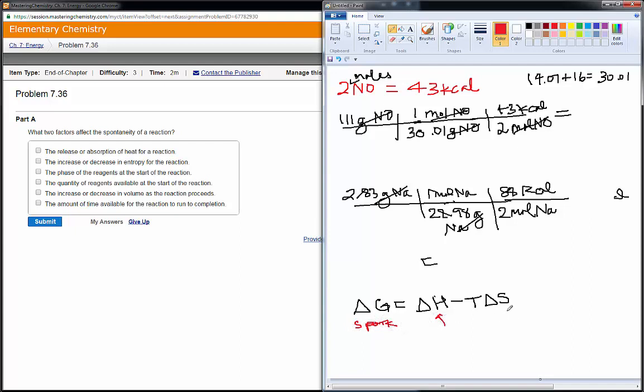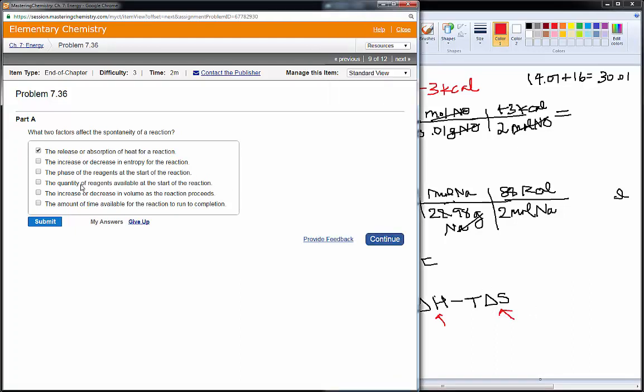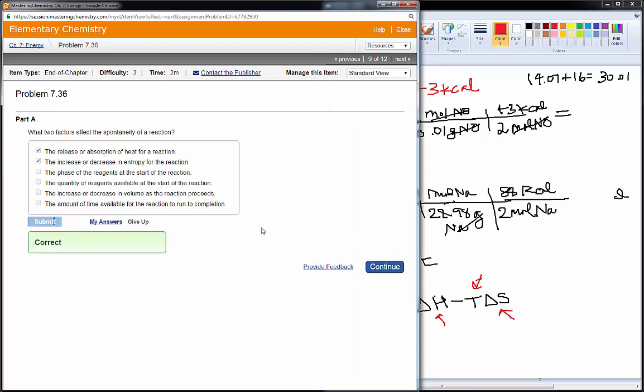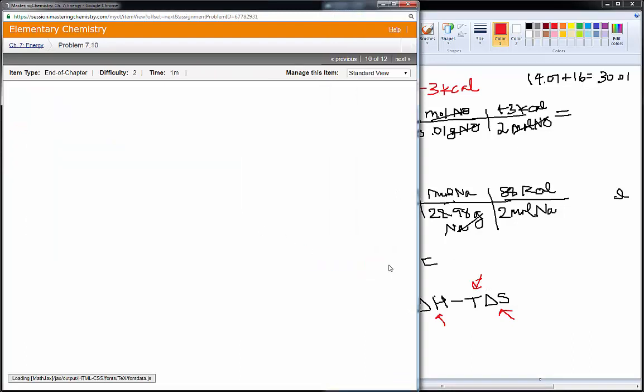Then, what you're looking at is enthalpy and entropy. So, release or absorption of heat, that is enthalpy. Increase or decrease in entropy, that's delta S. So, it's delta H and T delta S here. The phase of the reactions, nope. Quality of reagents, nope. Volume, nope. Time available, nope. You could also argue that temperature is a factor. But, they didn't include that here. So, we won't worry about that one.